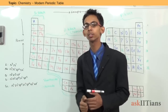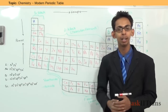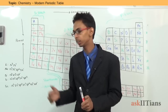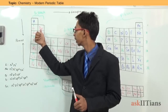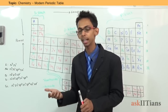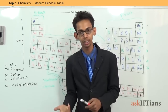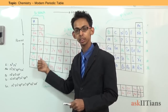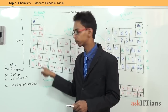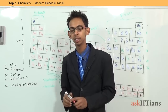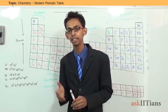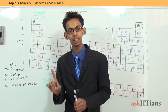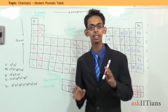The elements of group 2 are known as alkali earth metals. This is because their hydroxides are also strongly alkaline — for example, magnesium hydroxide is an alkali. Additionally, these elements are found in the earth's crust. That is why they are called alkali earth metals.